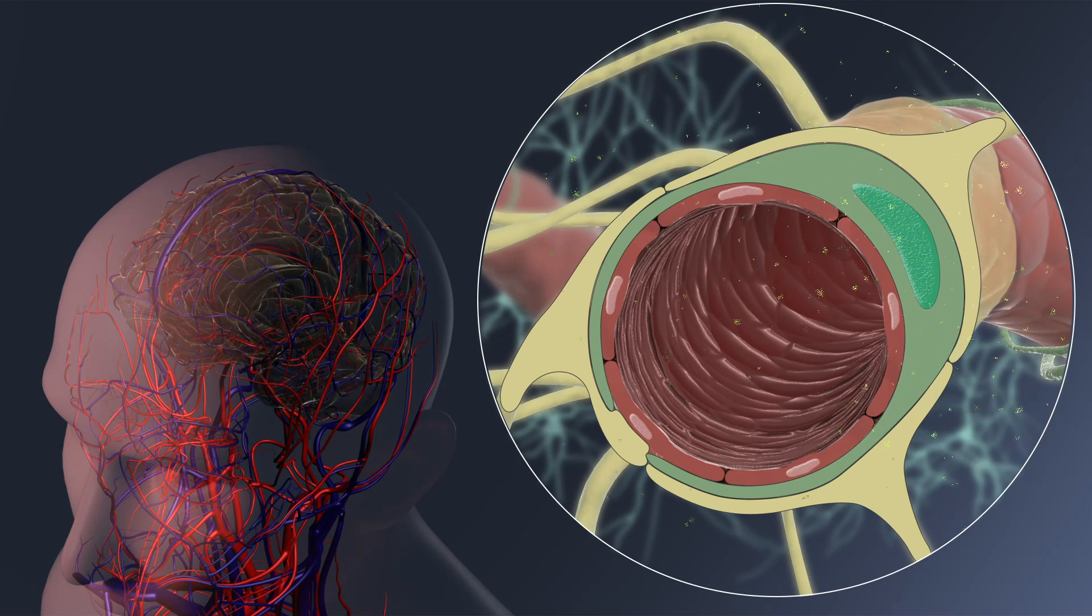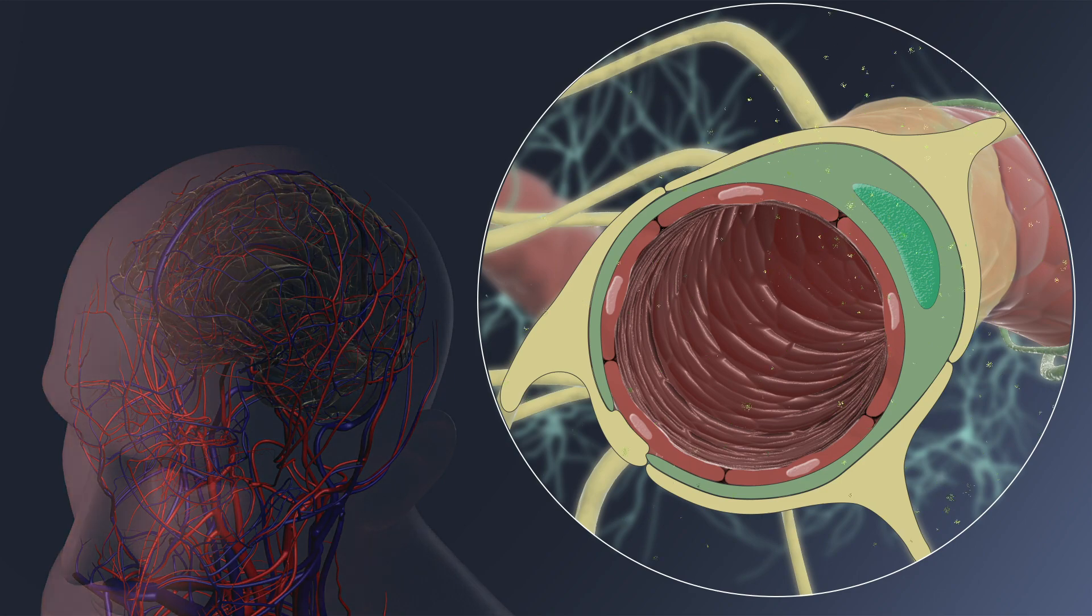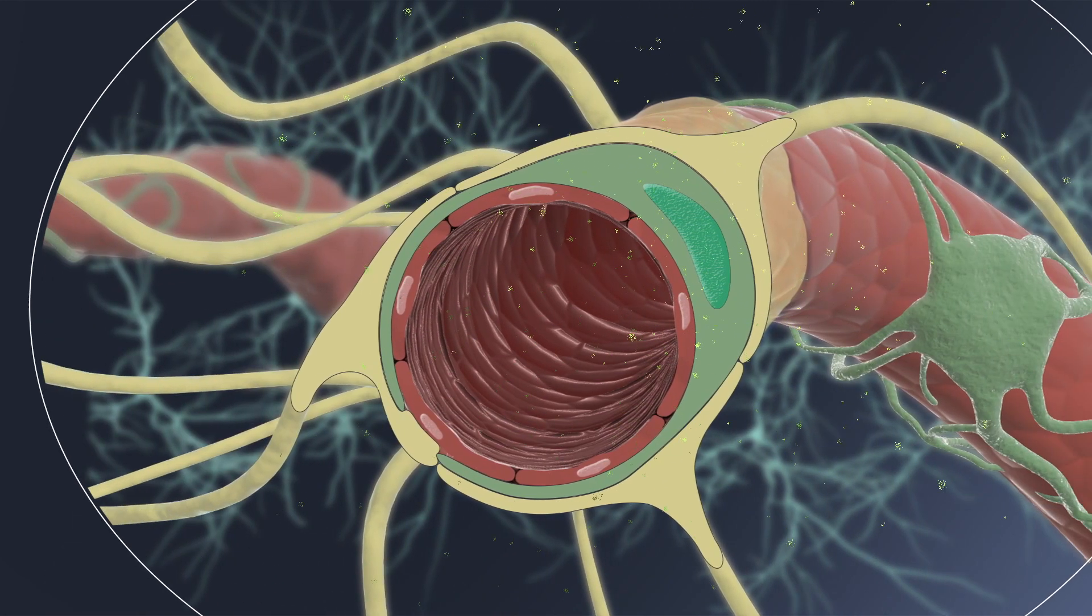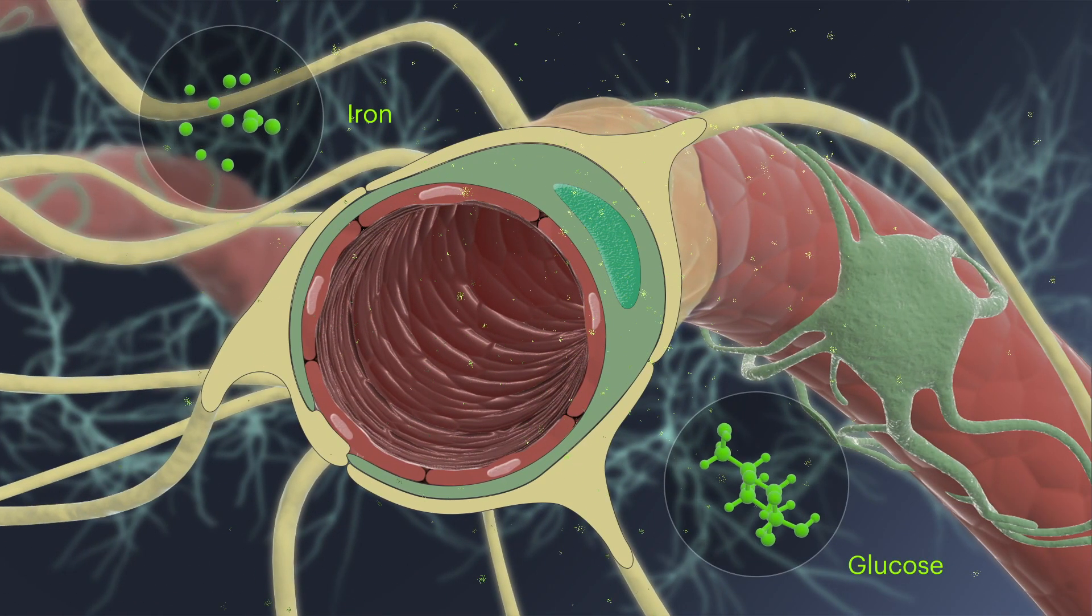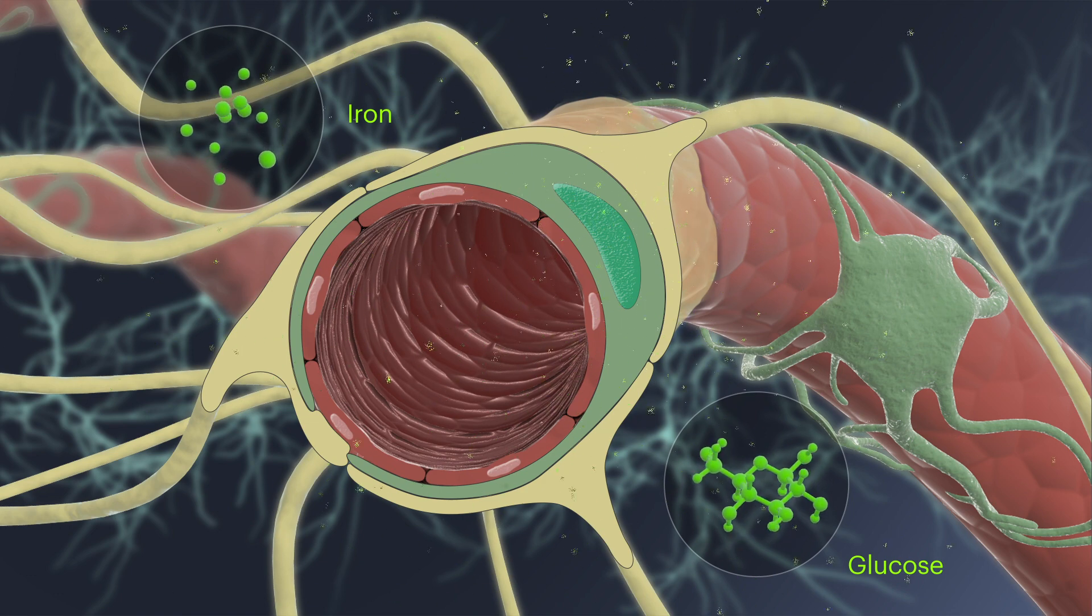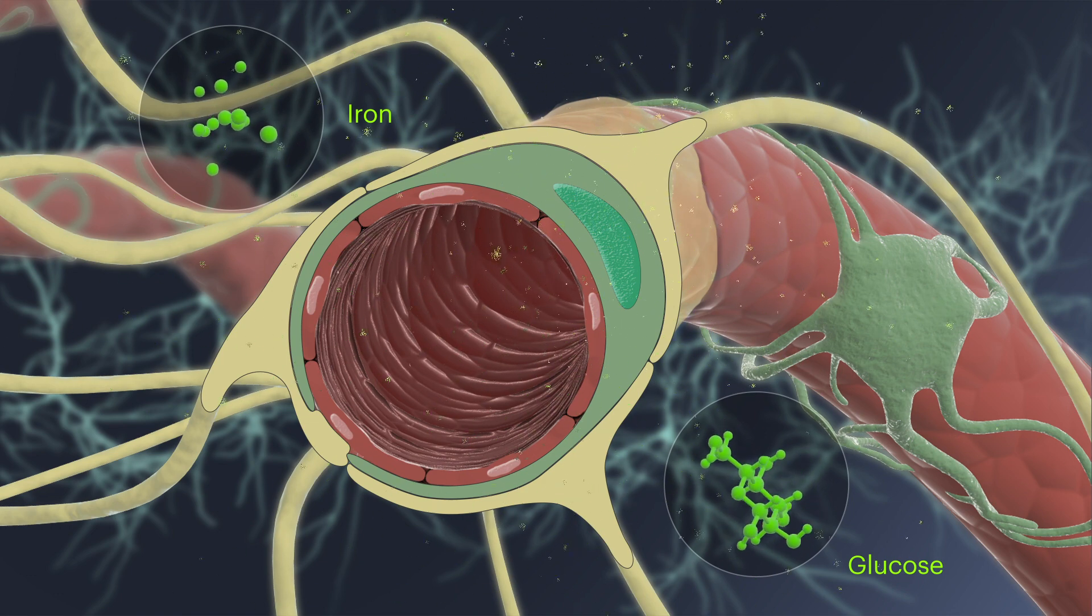The blood-brain barrier separates brain tissue from the body's blood circulation. It allows selective passage of iron, glucose, and other small molecules, shown here as green dots, from the blood to the brain that are needed for normal brain function.